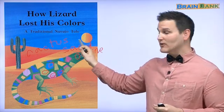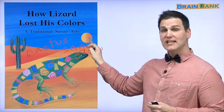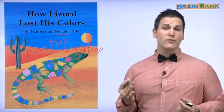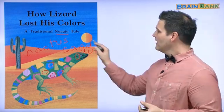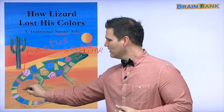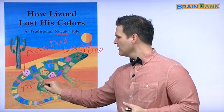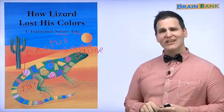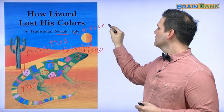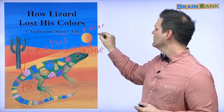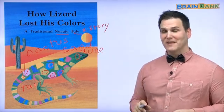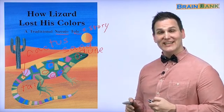Now look at this sentence: 'A Traditional Navajo Tale.' Navajo are people native to North America — they are American Indians. And 'tale' is different from this tail. This one is spelled T-A-I-L; the other is T-A-L-E, and it means story.